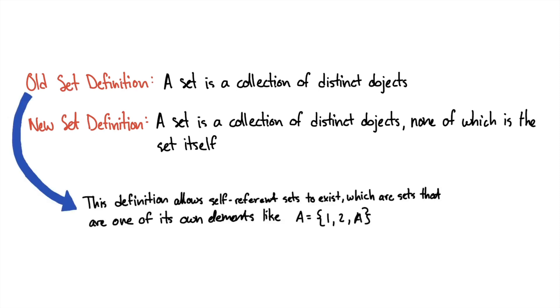So per the old definition of a set, it allows self-referent sets to exist, which are sets that are one of its own elements, like A equals the set of 1, 2, and A.